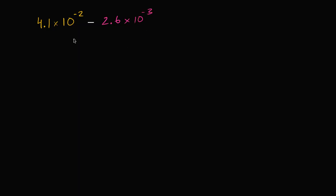And like always, I encourage you to pause this video and see if you can solve this on your own and then we can work through it together. Alright, I'm assuming you've had a go at it. So the easiest thing that I can think of doing is try to convert one of these numbers so that it's being multiplied by the same power of 10 as the other one. Can we express 4.1 times 10 to the negative 2 as something times 10 to the negative 3?